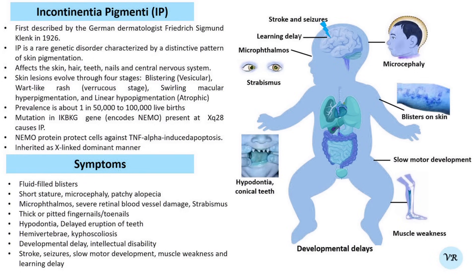IP was first described by the German dermatologist Frederick Sigmund Glank in 1926. IP disease is manifested in 4 stages: stage 1, that is the vesicular stage, and stage 2, that is the verrucous stage.